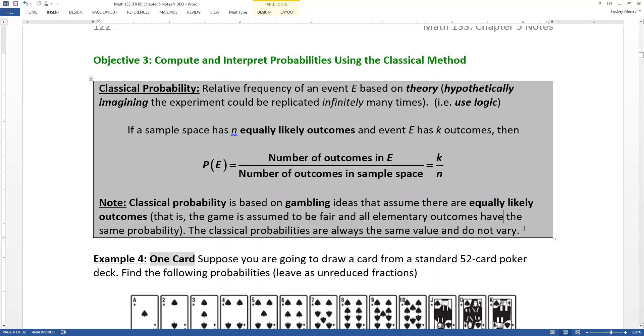So the classical probabilities assume those gambling ideas. Now we'll stretch that later, but for right now that's what we're doing. So we're going to assume equally likely. You assume the game is fair. You assume all outcomes have the same probability. And again, we'll tweak this a little bit later, but for right now this will work for us.